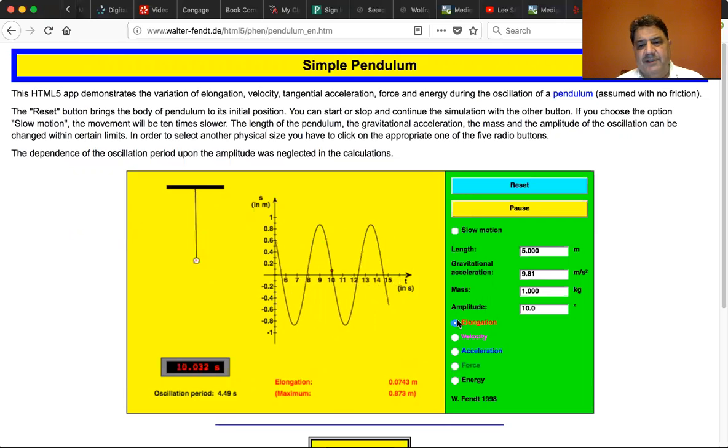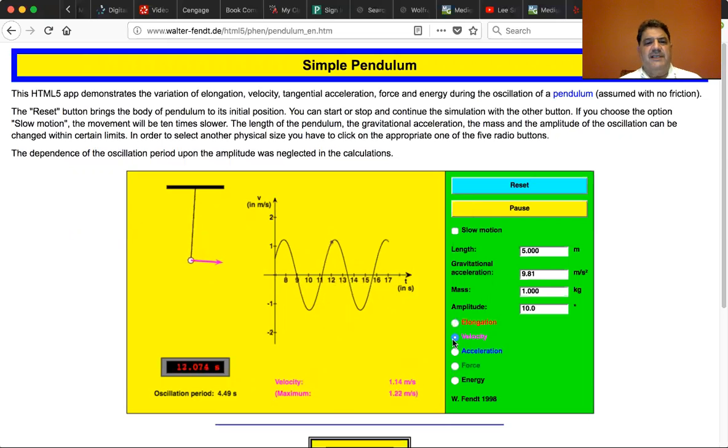We can see the velocity. Notice that the velocity is max when the pendulum goes through zero crossing. That means its kinetic energy is the fastest when it's at the zero crossing. And notice that the velocity is zero at either extent of the swing. That means it's fully potential energy.